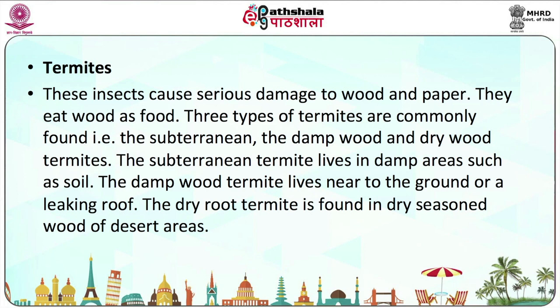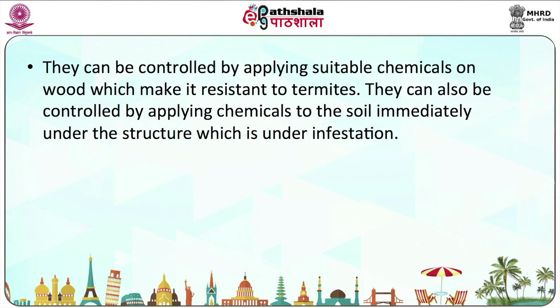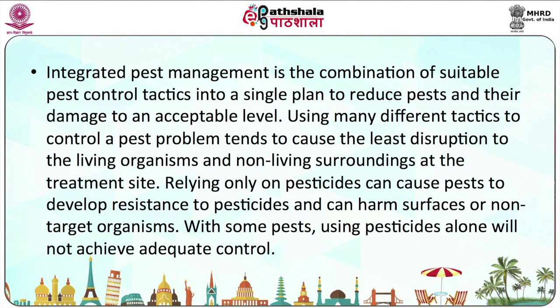Termites are another variety of pests. These insects cause serious damage to wood and paper — they eat wood as food. Three types of termites are commonly found: the subterranean, the damp wood, and the dry wood termites. The subterranean termite lives in damp areas such as soil. The damp wood termite lives near the ground or a leaking roof. The dry wood termite is found in dry, seasoned wood of desert areas. They can be controlled by applying suitable chemicals on wood, which makes it resistant to termites, or by applying chemicals to the soil immediately under the infested structure.